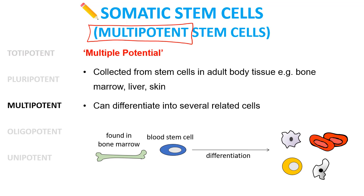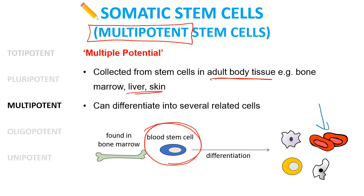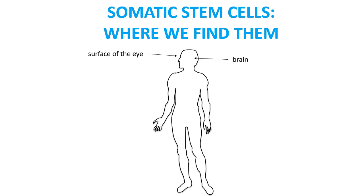Somatic stem cells are multipotent — 'multi' meaning multiple — so these stem cells can turn into multiple types of cells but not a whole human body. They're collected from adult body tissue but are really hard to find: inside the bone marrow, in particular layers of the liver, the skin, the brain, the surface of the eye, the intestines, and the muscles. A classic multipotent stem cell is the blood stem cell found in the bone marrow, which can differentiate into all different types of blood cells — red blood cells, white blood cells, and platelets.